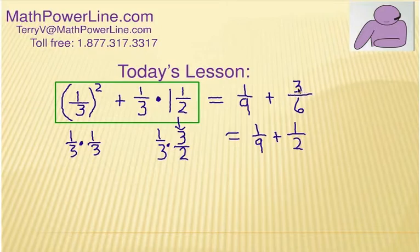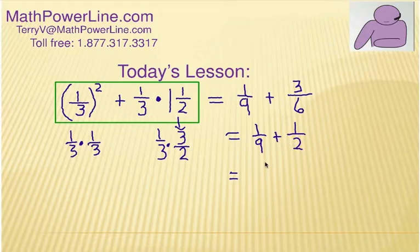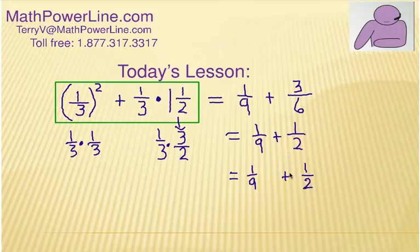Now I want to do that first so I have smaller numbers to work with. Now here's the other concept we've got to remember — we're adding fractions of unlike denominators. This is something you can do in your head, but I'm going to write it out and show you a little technique for those of you that struggle a little bit with unlike denominators.